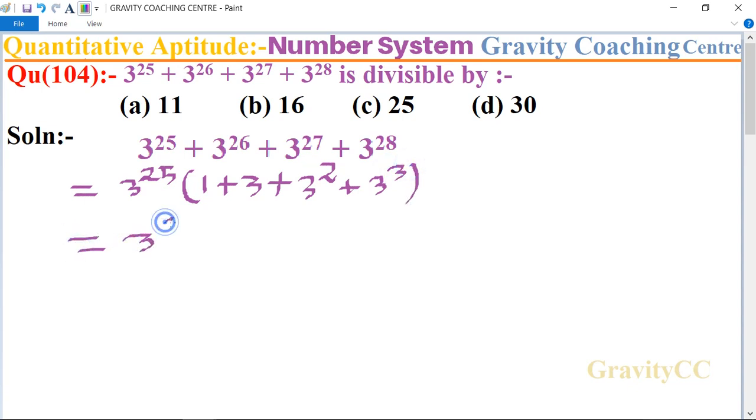3 to the power 25, and 1 plus 3 plus 9 plus 27 equal to 3 to the power 25...